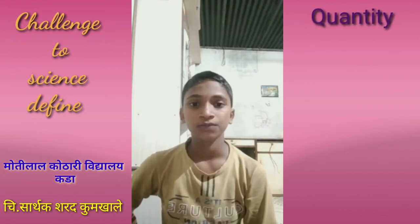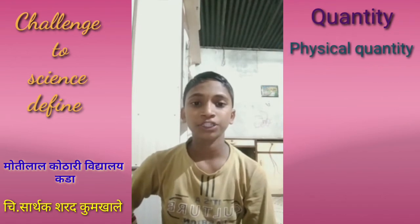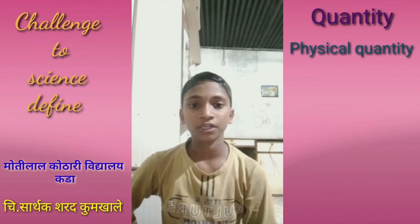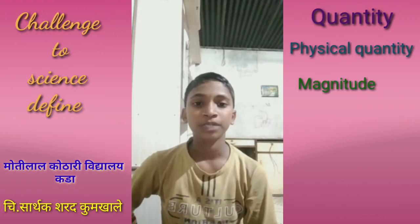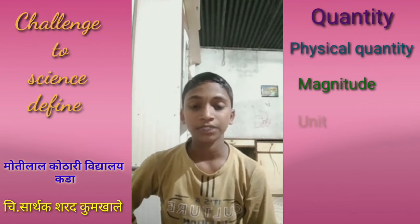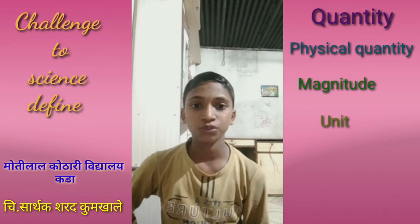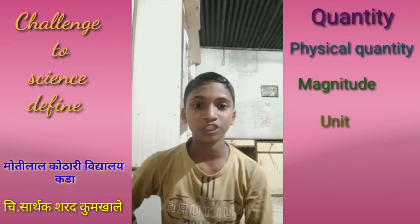Second: physical quantity — the quantity which can be measured and verified is called as physical quantity. Third: magnitude — the numerical number of any physical quantity is called as magnitude. Fourth: unit — the standard reference used for measurement of any physical quantity is called as unit.